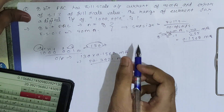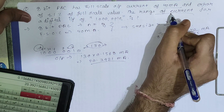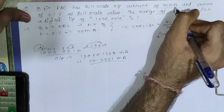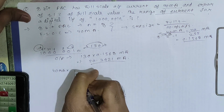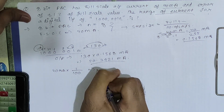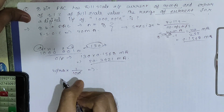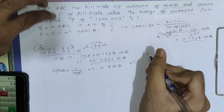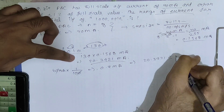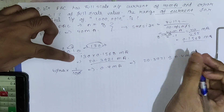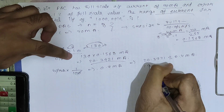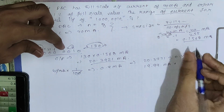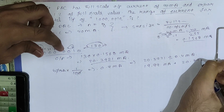Now we have the current but we need to find the range of current, which depends on the error of plus-minus 1% of full-scale value. The full-scale value is 40mA, so 40mA multiplied by 1/100 equals 0.4mA. Therefore the range of current is 20.3921 plus-minus 0.4 milliamperes, which gives a range of 19.99mA to 20.7921mA.